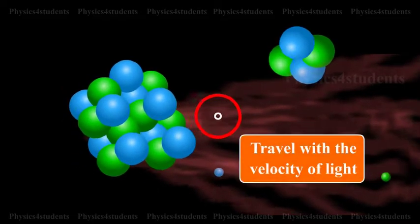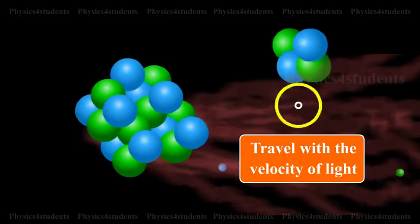They travel with the velocity of light. They produce very less ionization.